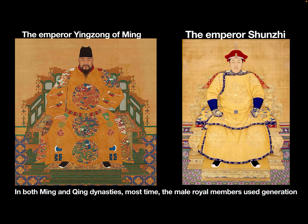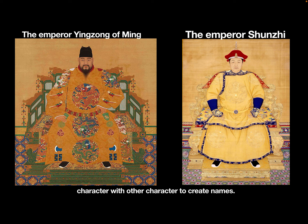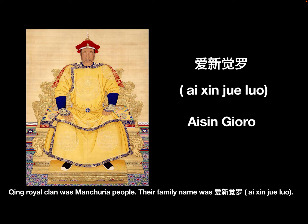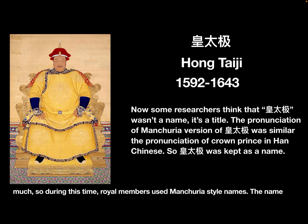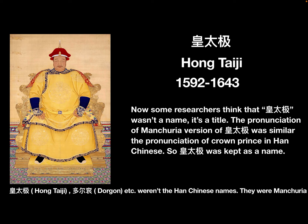This method is really useful for a big clan to distinguish different generations. In both Ming and Qing dynasties, most male royal members used a generation character with other characters to create names. The Qing royal clan were Manchuria people. Their family name was Ai Xin Jue Luo. In later Jin and early Qing dynasty, Han Chinese culture didn't influence the royal family very much. During this time, royal members used Manchuria style names.